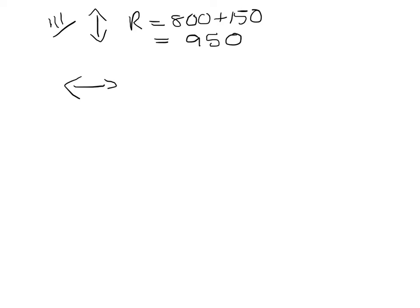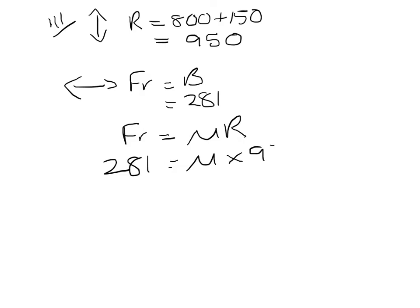If I then look at the horizontal forces that tells me that the friction has to equal b which I have just worked out is 281 newtons. Finally I am going to use that friction equals mu r. So 281 has to equal mu times 950. So mu is 281 over 950 which gives an answer to 3 significant figures of 0.296.